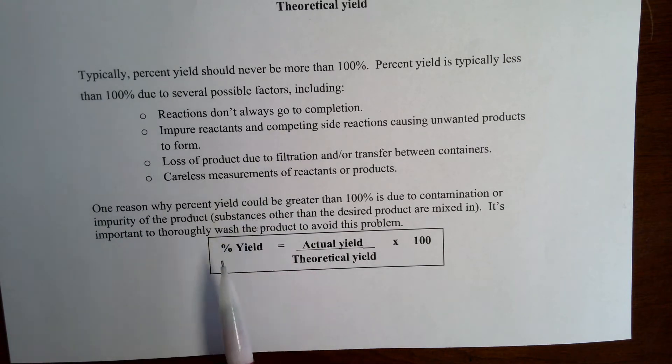One reason why percent yield could be greater than 100 percent is due to contamination or impurity of the product. So substances other than the desired product are mixed in. We're trying to thoroughly wash the product to avoid this problem, but that doesn't always prevent percent yield greater than 100 happening.